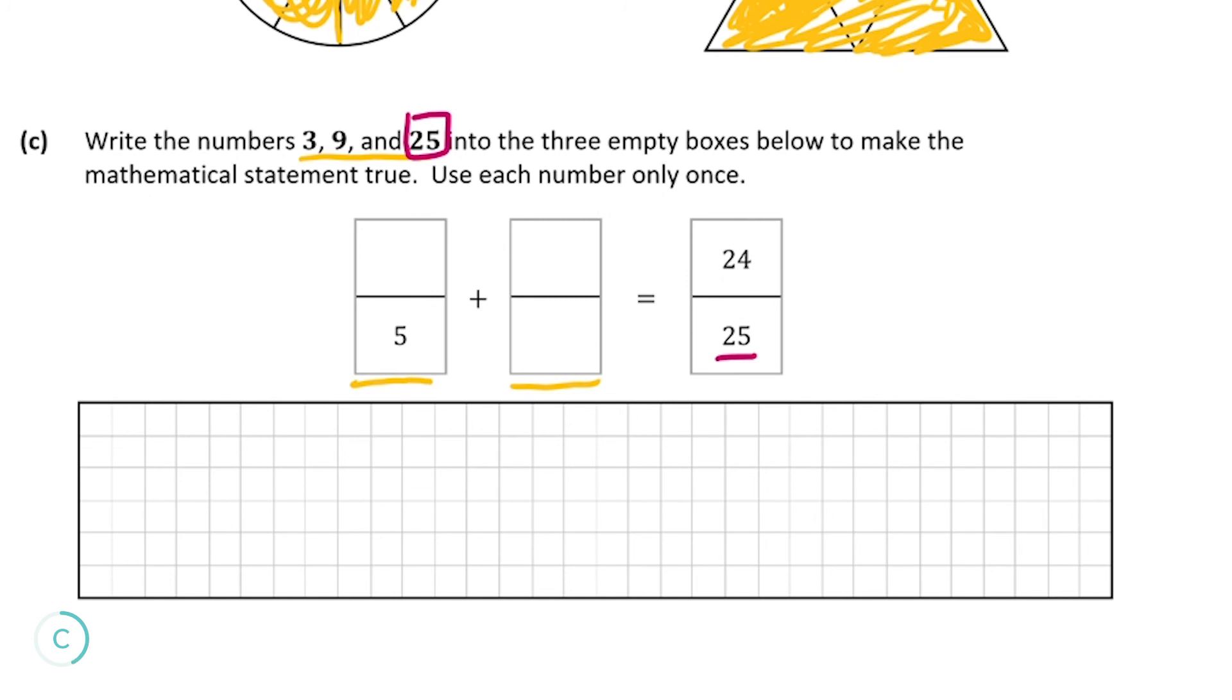So since 25 is on the bottom on the right hand side, I definitely want 25 on the bottom of one of our fractions on the left hand side. And since the left hand fractions filled in for us, we're going to put 25 into this bottom right box here. Next we have three and nine left to fill in.